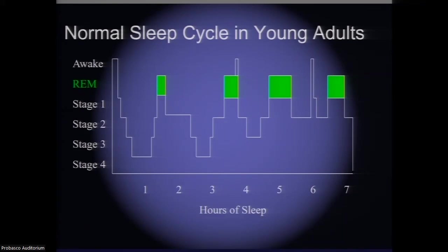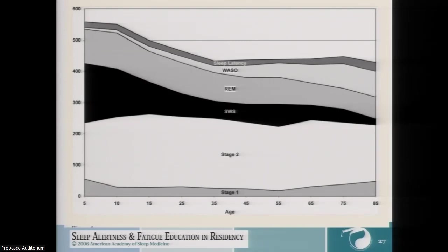Here's a hypnogram showing a normal sleep cycle in a young adult — with wake, stage one, two, and three. REM sleep is close to the awake line because your brain activity during REM is more like wakefulness. As we age, we actually get less slow wave sleep (stage three), a little bit less REM, more wake after sleep onset (WASO), and sleep latency — the time it takes to fall asleep — can increase. There's also generally poor sleep hygiene after people retire.